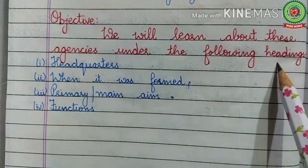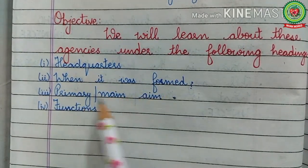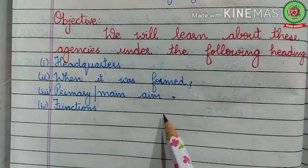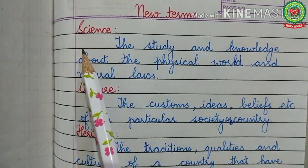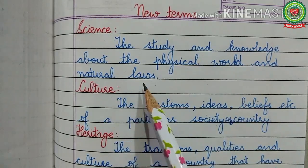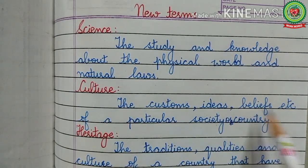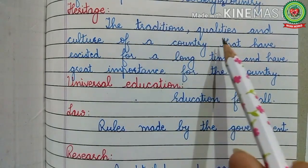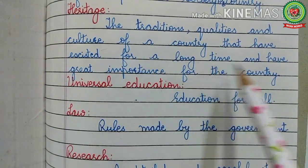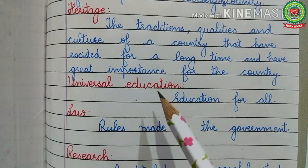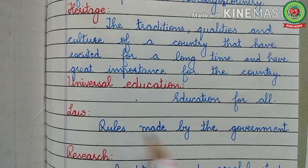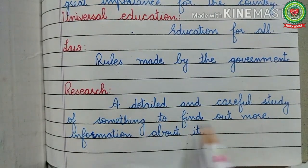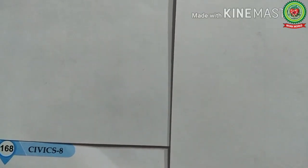Before discussing all these points, let us discuss the new terms related to today's topic. Science: the study and knowledge about the physical world and natural laws. Culture: the customs, ideas, beliefs, etc. of a particular society or country. Heritage: the traditions, qualities, and culture of a country that have existed for a long time and have great importance. Universal education means education for all. Law: rules made by the government. Research: a detailed and careful study of something to find out more information about it.